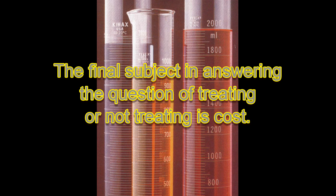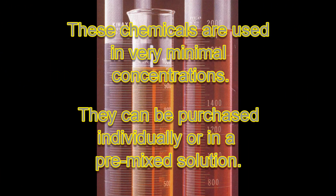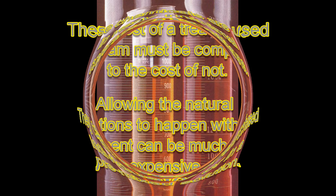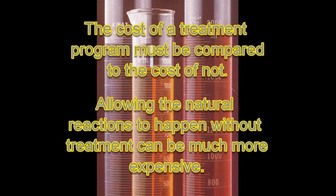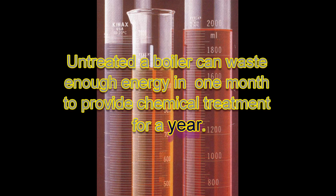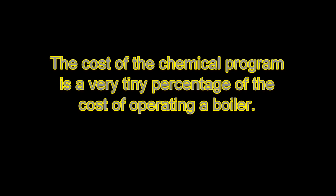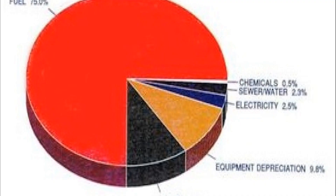The final subject is the cost of the chemical program. The chemicals are available in gallon containers, with five-gallon sizes being the most economical. Allowing the natural chemical reactions to occur can be much more expensive — an untreated boiler can waste enough energy in one month to provide chemical treatment for a year. The cost of chemical treatment is well documented in industrial applications, and this example shows the chemical treatment program was less than one percent of total costs.